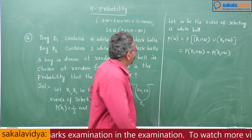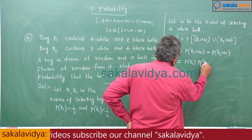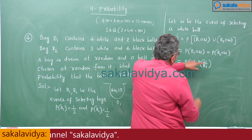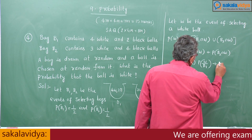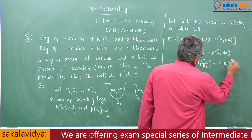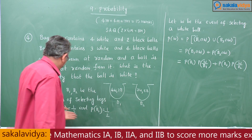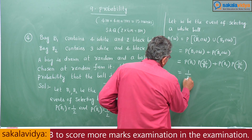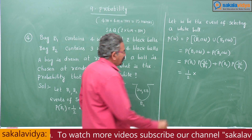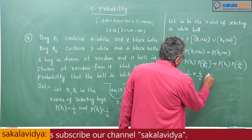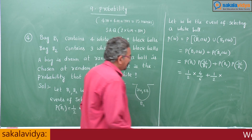Using the multiplication theorem, this can be written as P(B1) × P(W|B1) + P(B2) × P(W|B2). P(B1) is 1/2; the probability of selecting a white ball from bag 1 is 4 out of 6 total balls, so 4/6. Plus 1/2 multiplied by 3/8, since bag 2 has 3 white balls out of 8 total.